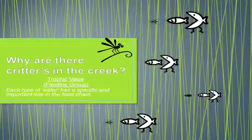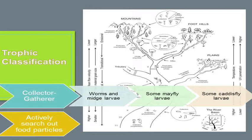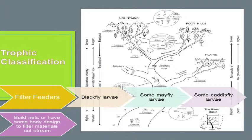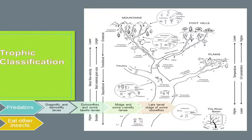Now we're going to go over a little bit of Bugs 101. In a stream we have a lot of different types of insects, much like there are different types of animals in the terrestrial world. We have shredders — insects that eat detritus such as leaves or twigs. We have collector-gatherers that actively search out food particles in the water column. We have filter feeders that build nets or have some kind of body designed to filter materials out of the water. We have grazers or scrapers — the cows of the aquatic community — that scrape algae off the rocks. And of course, as in any ecosystem, we also have predators.